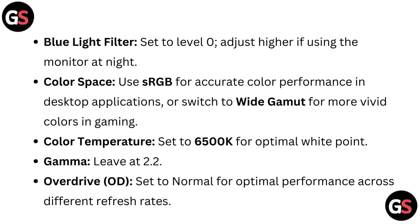Color space: use sRGB for accurate color performance in desktop applications, or switch to wide gamut for more vivid color in gaming. Color temperature: set to 6500 Kelvin for optimal white point. Gamma: leave at 2.2. Overdrive (OD): set to normal for optimal performance across different refresh rates.